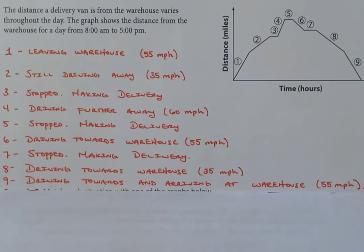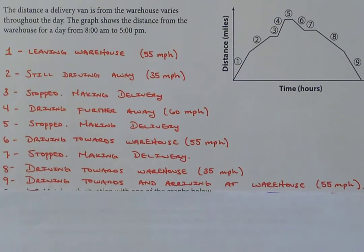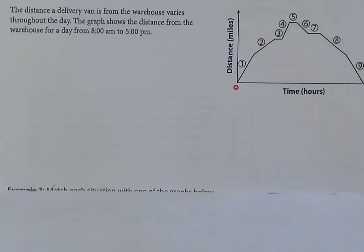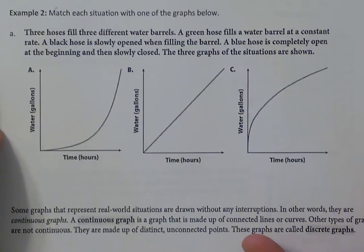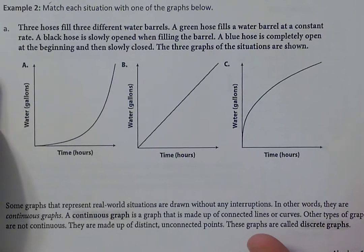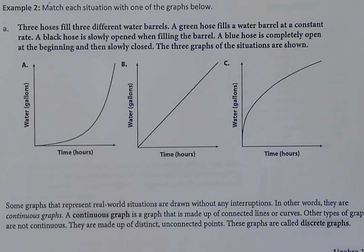So that is example one — we looked at a graph, took a scenario, and gave a description for each part of the graph. The upward sections indicate moving away, the downward sections indicate moving back, and steps 3, 5, and 7 indicate stops on the route — whether for deliveries, gas, food, or even a railroad crossing.